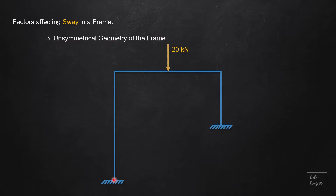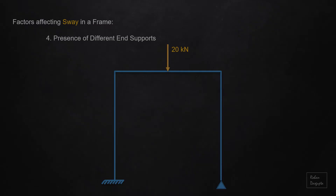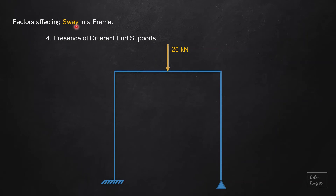Thirdly, if the geometry of the frame itself is unsymmetrical — for example, this column length is different from this column length — this is an unsymmetrical geometry of the frame, and in this case the frame will also be a sway frame.